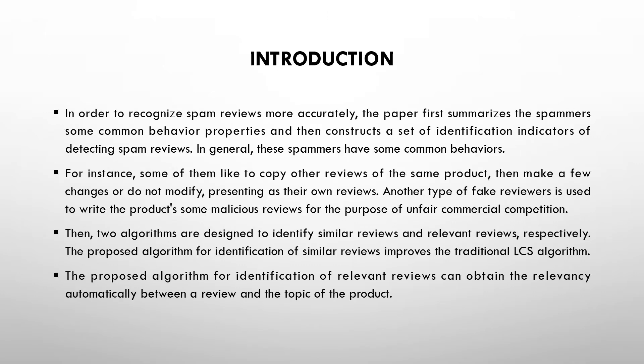Introduction. In order to recognize spam reviews more accurately, the paper first summarizes the spammers' common behavior properties and then constructs a set of identification indicators for detecting spam reviews. In general, these spams have some common behavior. For example, some customers copy the review of another customer of the same product, then modify the review or keep it as it is. Another type of fake review is used to write malicious reviews for the purpose of unfair commercial competition. Two algorithms are designed to identify similar reviews and relevant reviews.